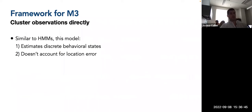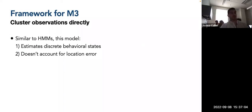The framework for M3 is a little bit simpler — it's a one-stage model where we're clustering observations directly. Similar to hidden Markov models, M3 estimates discrete behavioral states. Unlike the state-space model, it is able to estimate these finite states but does not account for location error. So if you're using Argos data, you need to account for location error from a state-space model first.